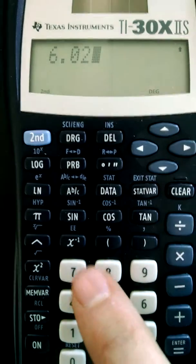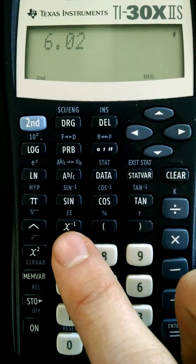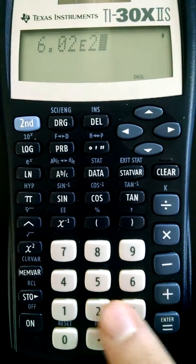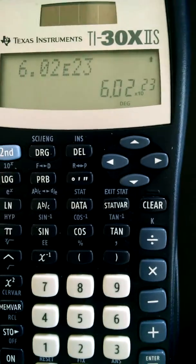Instead, you're going to hit 2nd, and note the double E right there. It's right above the x-1. If you hit that button, then you hit 2, 3, and you hit enter. Note we have 6.02 times 10 to the 23rd.